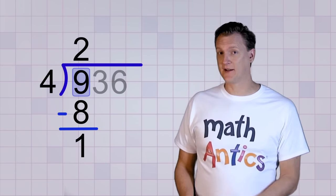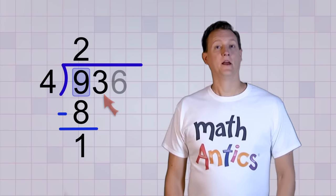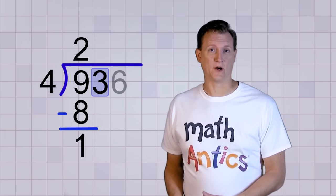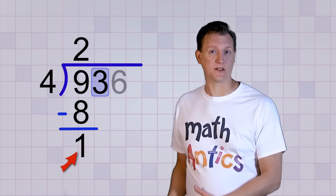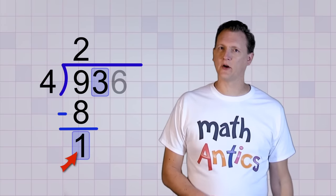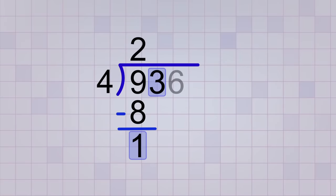Since we're going digit by digit, let's stop ignoring the next digit in our dividend, the 3. Now you might think that our next division step is to divide that 3 by the 4, but it's not quite that simple. We had a remainder from our last division step and we can't just forget about that. We need to combine that remainder with our next digit and divide them both together. We do that by bringing down a copy of the next digit, the 3, and put it right beside the remainder, which is 1.